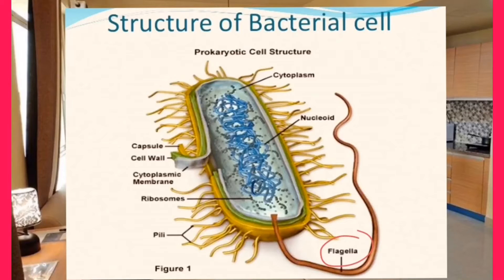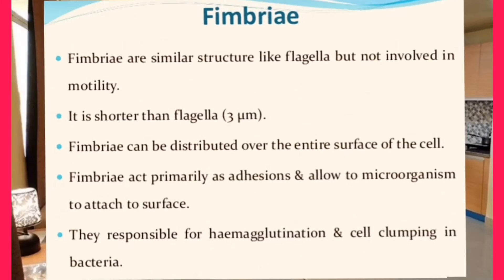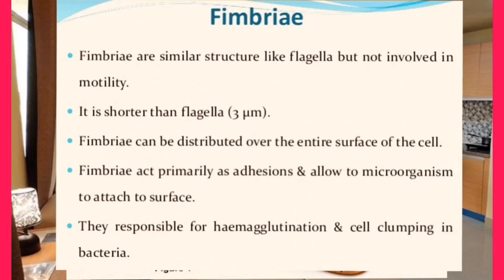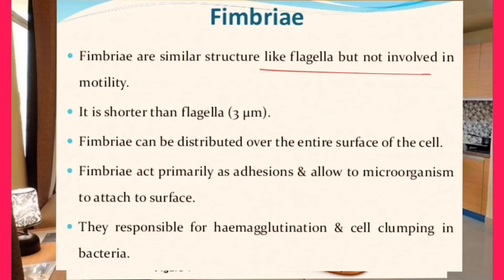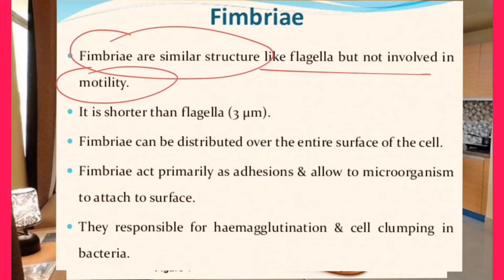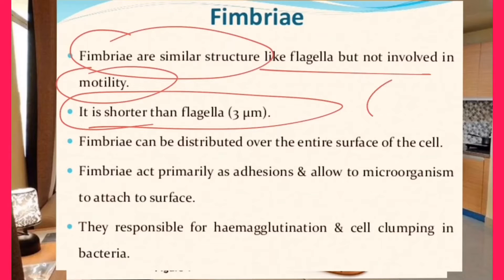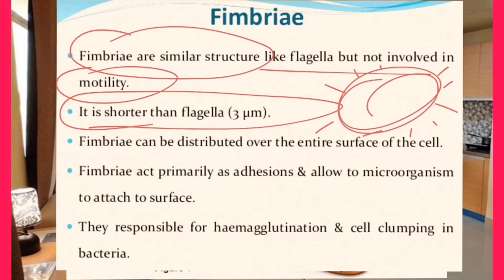A similar type of structure is called fimbriae. We discussed how fimbriae differ from flagella — what their structures are and how they look. They look similar to flagella, but they are not involved in any type of motility — that means they do not produce movement. They are shorter than flagella and are present all around the cell. They differ from flagella in that they are shorter and more numerous.